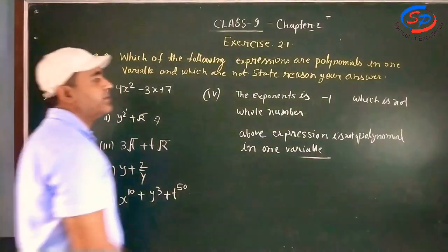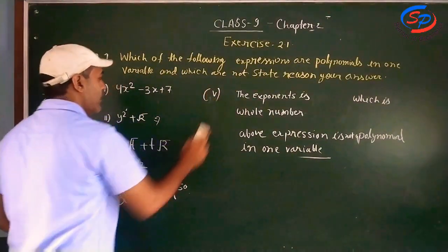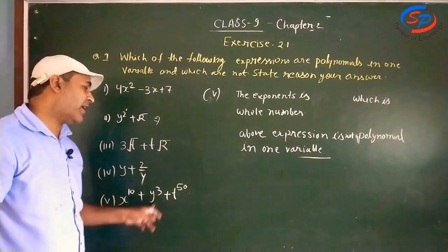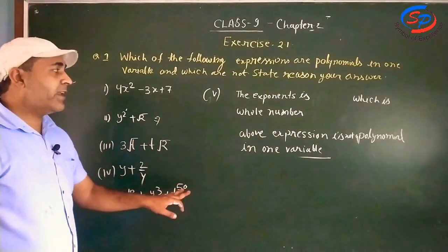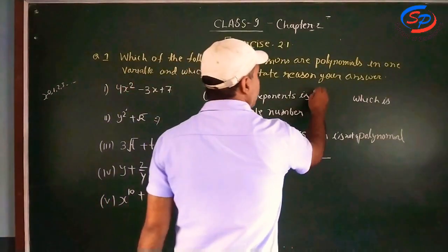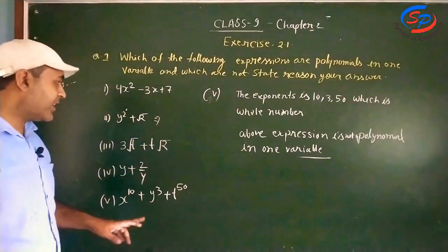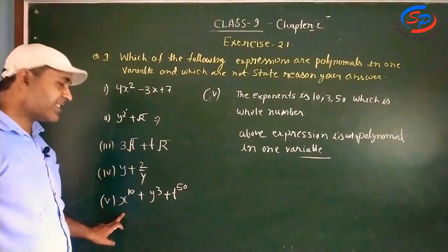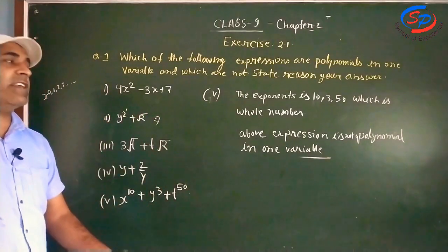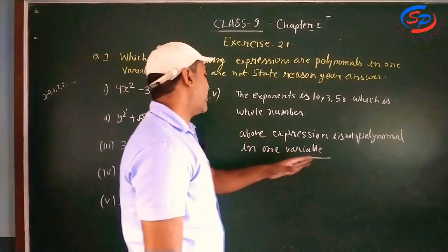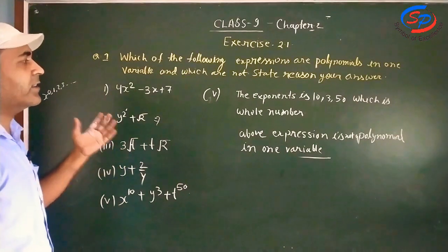Number 5 is very easy: x to the power 10 plus y to the power 10 plus t to the power 50. These powers are whole numbers — the exponents are 10, 10, and 50, which are whole numbers. But here there are 3 variables: x is one variable, y is the second, and t is the third. So this expression is not a polynomial in one variable.